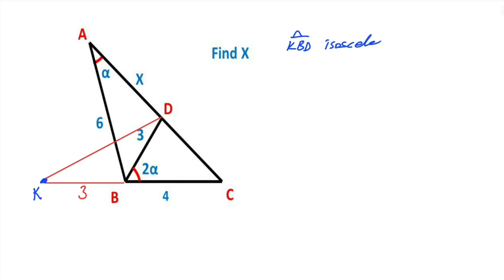Therefore KBD triangle is an isosceles triangle. That means these two angles must be equal alpha, because of isosceles triangle. And then if you notice that opposite of the alphas have same length.